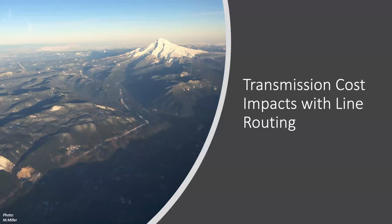If we think about line routing, many of the lines in the US are older lines. You can see this particular photo that I took out of the window of a plane of Mount Hood. You can see through the National Forest — the forested area here — and this line cuts right through the Mount Hood National Forest. This was built back in the 70s, and it was a lot easier back then to build lines, but you can see the impact on the landscape.